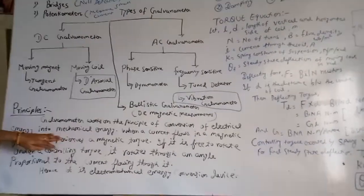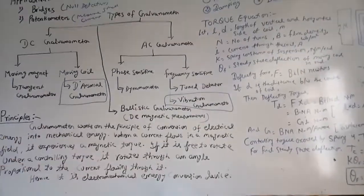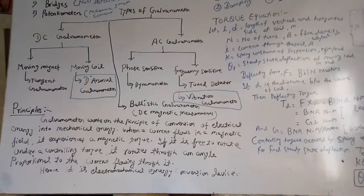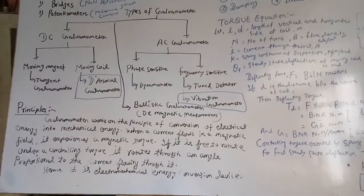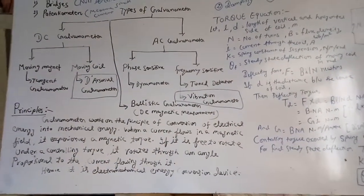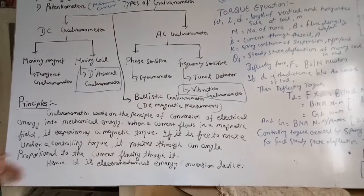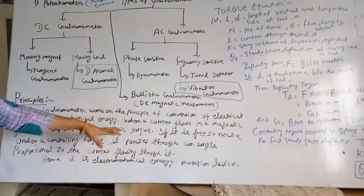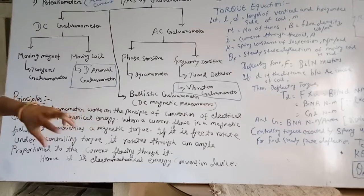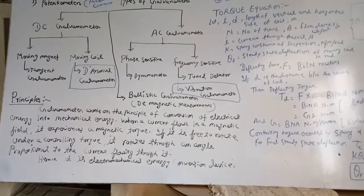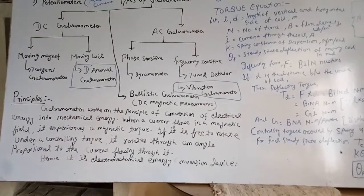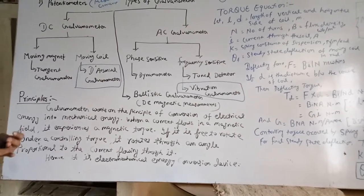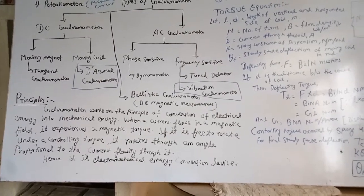There is a coil in the construction of the galvanometer, placed in a magnetic field. If a source is applied across the coil, then current flows through it. There is also a magnetic field present, so two magnetic fields are produced and, according to that interaction, torque is produced in the circuit.